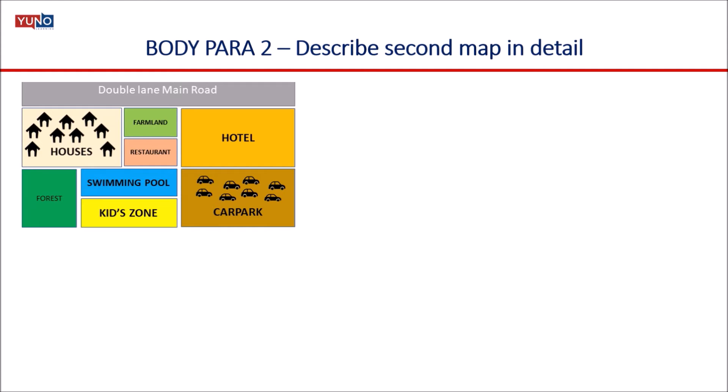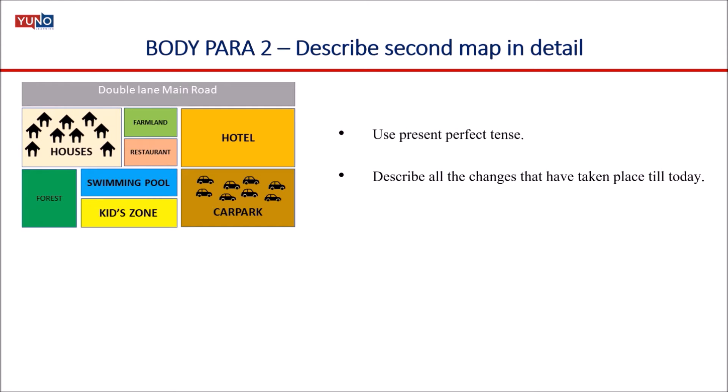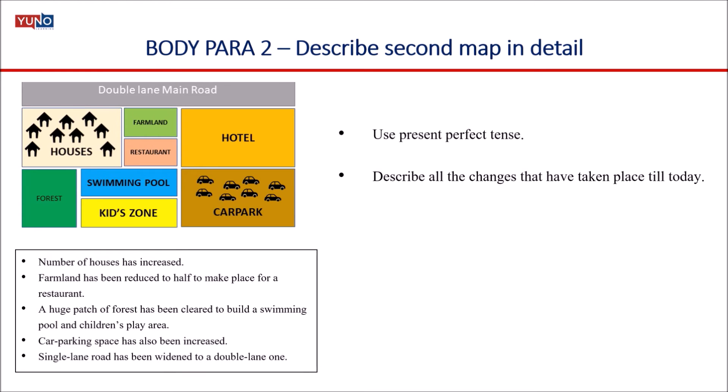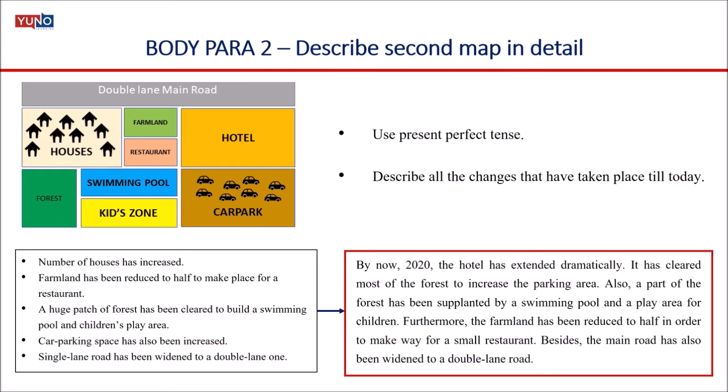In body paragraph two, you describe the second map in detail. Since the second map is of the present year, we'll be using present perfect tense. Here you describe all the changes that have taken place till today. For example: 'By 2020, the hotel has extended dramatically. It has cleared most of the forest to increase the parking area. Also, a part of the forest has been supplanted — meaning replaced — by a swimming pool and a play area for children. Furthermore, the farmland has been reduced to half in order to make way for a small restaurant. Besides, the main road has also been widened to a double lane road.'